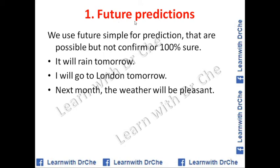We use future simple for future predictions — predictions that are possible but not confirmed or 100% sure. For example: It will rain tomorrow. I will go to London tomorrow. Next month the weather will be pleasant. These are future predictions.